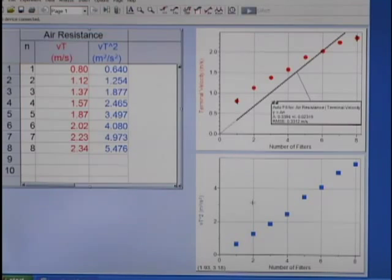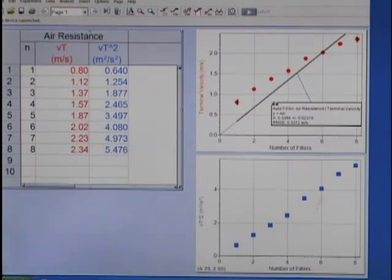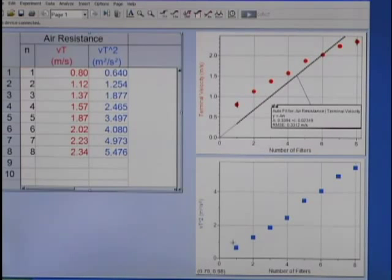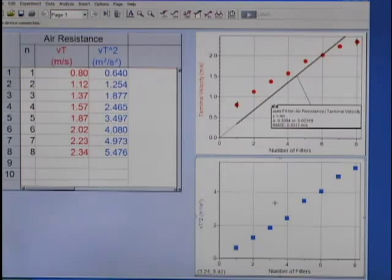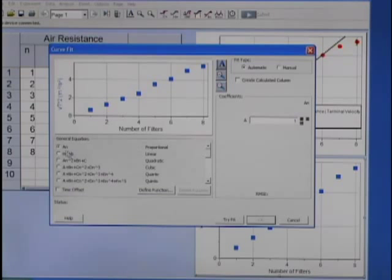Now this one also looks like pretty much a straight line, but that straight line is heading toward the origin, which is very different from the red, from the upper graph of terminal velocity versus number of filters. Let's take this lower graph and fit a line of proportionality to it.